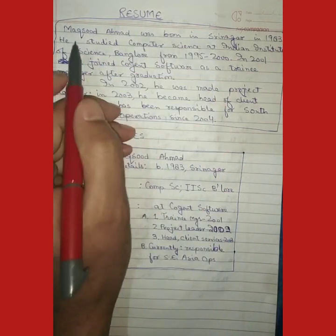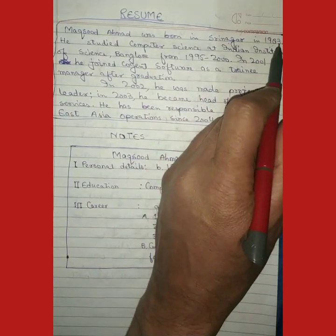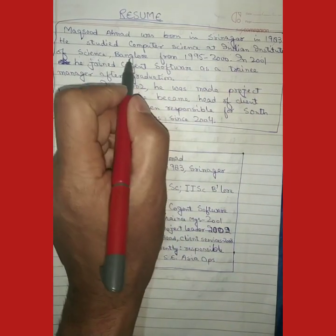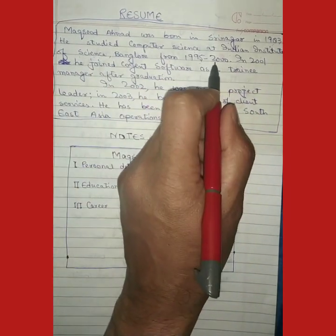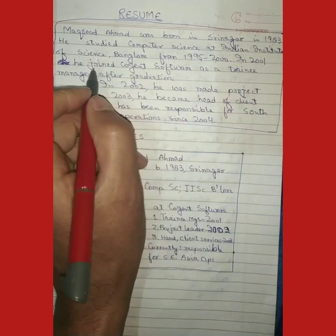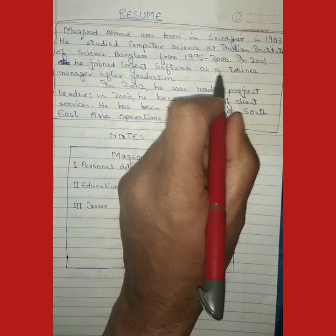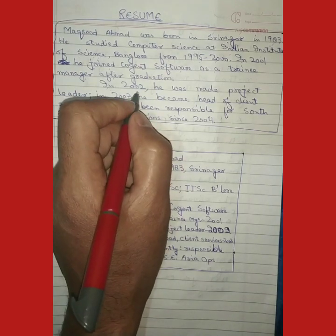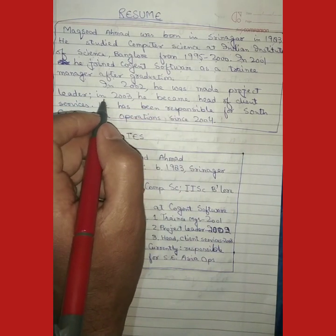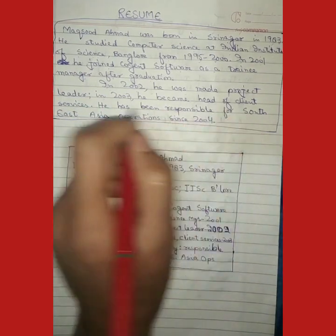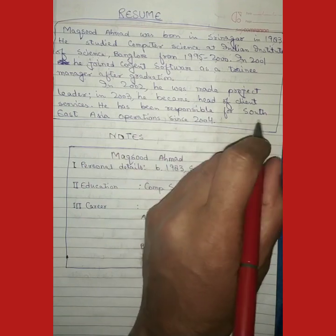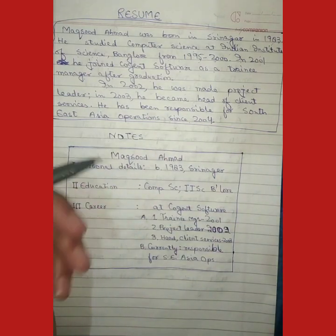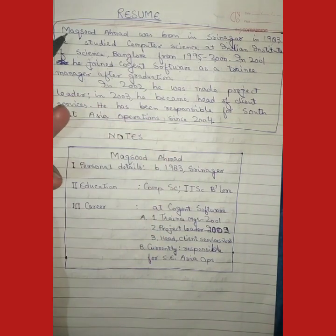The resume reads: Maksud Ahmad was born in Srinagar in 1983. He studied computer science at the Indian Institute of Science, Bangalore, from 1995 to 2000. In 2001 he joined Cogent Software as a trainee manager after graduation. In 2002 he was made project leader. In 2003 he became head of client services. He has been responsible for Southeast Asia operations since 2004.